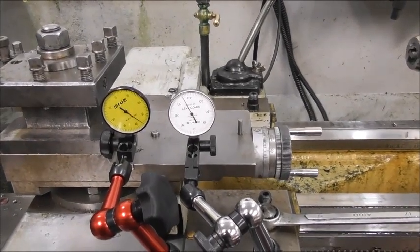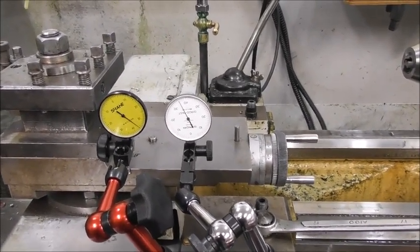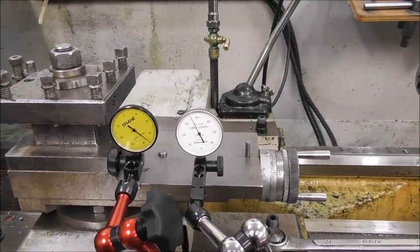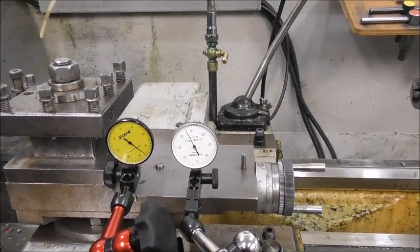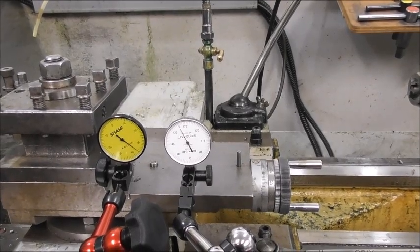And then there's the thorny question of what resolution dial indicator do you buy? You can get them in a hundredth of a millimeter or half a thou's, approximately the same—half thou's, one thou split into two—or you can get them in a tenths of a thou, or microns I suppose would be the metric equivalent.